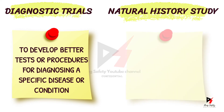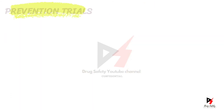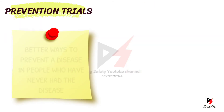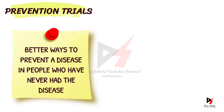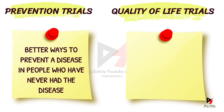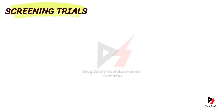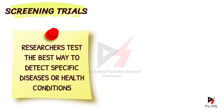The second type is natural history studies. These studies provide important information about how disease and health progress. In prevention trials, researchers look for better ways to prevent a disease in people who have never had it, or to prevent the disease from returning in people who have already recovered. In quality of life trials, researchers explore and measure ways to improve the comfort and quality of life of people with a chronic illness. In screening trials, researchers test the best way to detect specific diseases or health conditions.